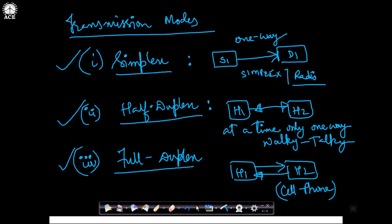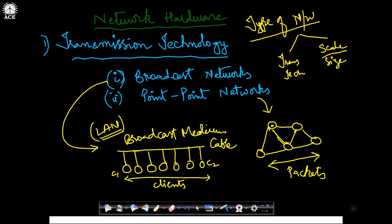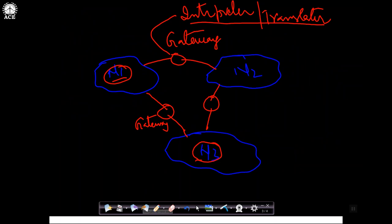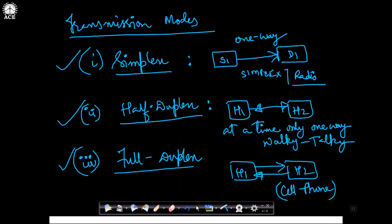This is all about network hardware as an essential part of network design. In summary: types of networks are classified based on transmission technology — broadcast or point-to-point; modes of data transfer — unicast, multicast, and broadcast; types of networks by scale — LAN, MAN, and WAN with their essential characteristics; and transmission modes between communicating entities — simplex, half-duplex, or full-duplex. In the next video, we will see network software, as the design of a network involves both hardware and software.